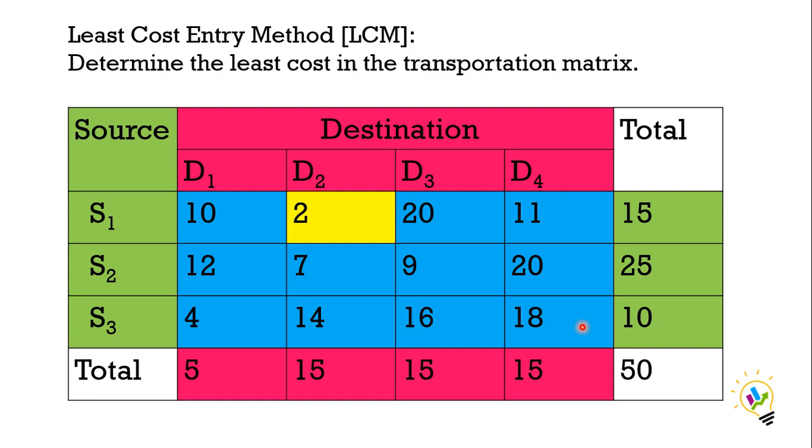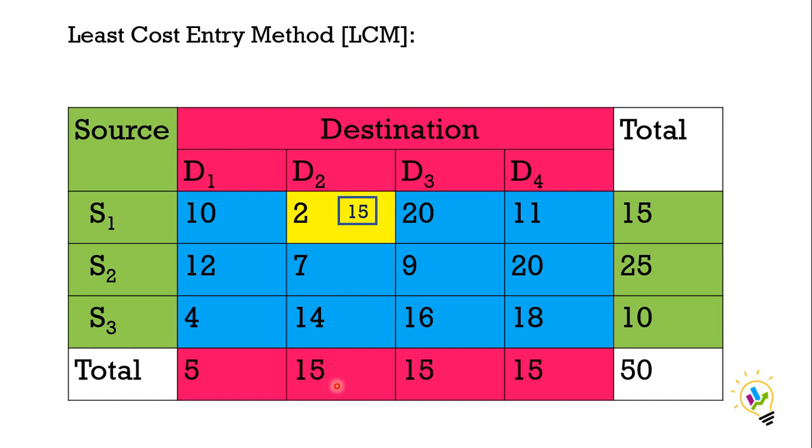First, the least value is 2. Now among the available costs, 2 is the minimum value. So first, the material needs to be allocated for this cell. This cell is between S1 source to destination D2. How much material can be allocated? Source S1 can give 15 units and destination D2 can receive 15 units. So 15 will be allocated.